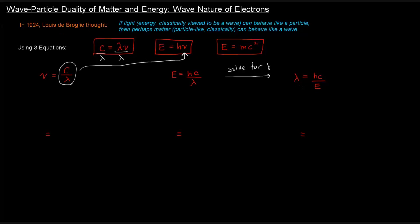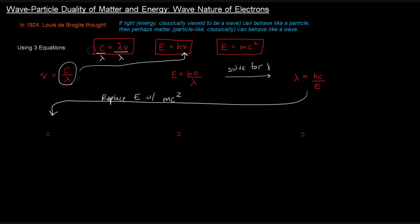Now we've solved for wavelength. From here, we're going to replace E with mc squared, because E equals mc squared. That gives us lambda equals hc over mc squared. We can cancel one of the c's, and that gives us lambda equals h over mc.